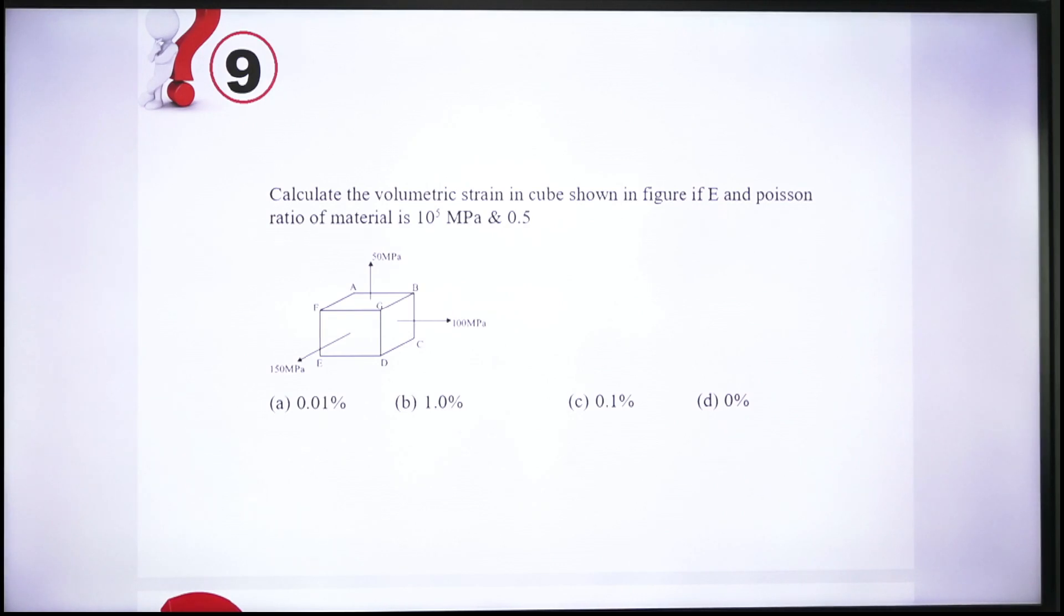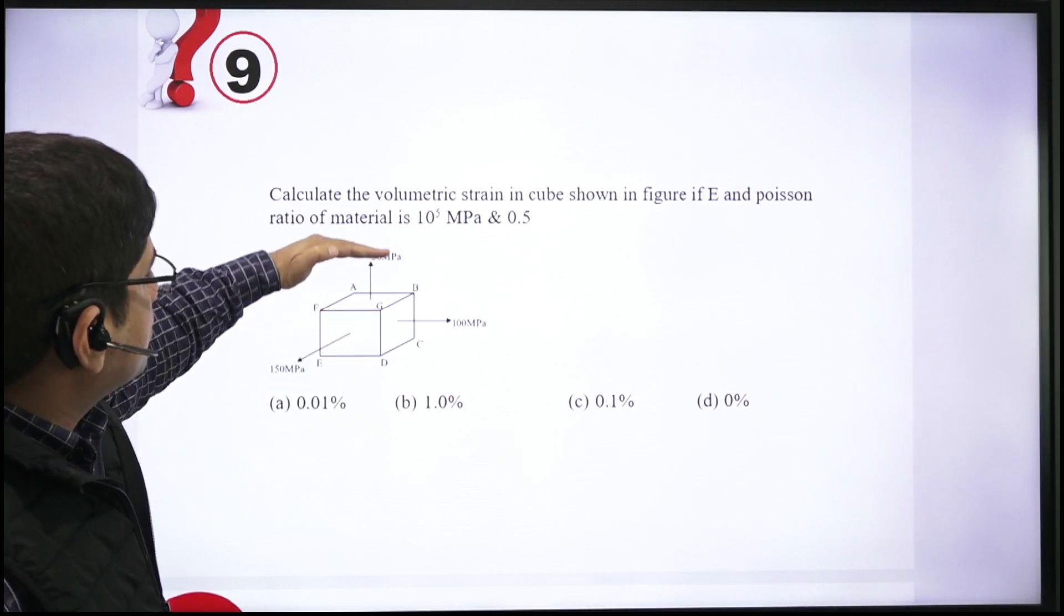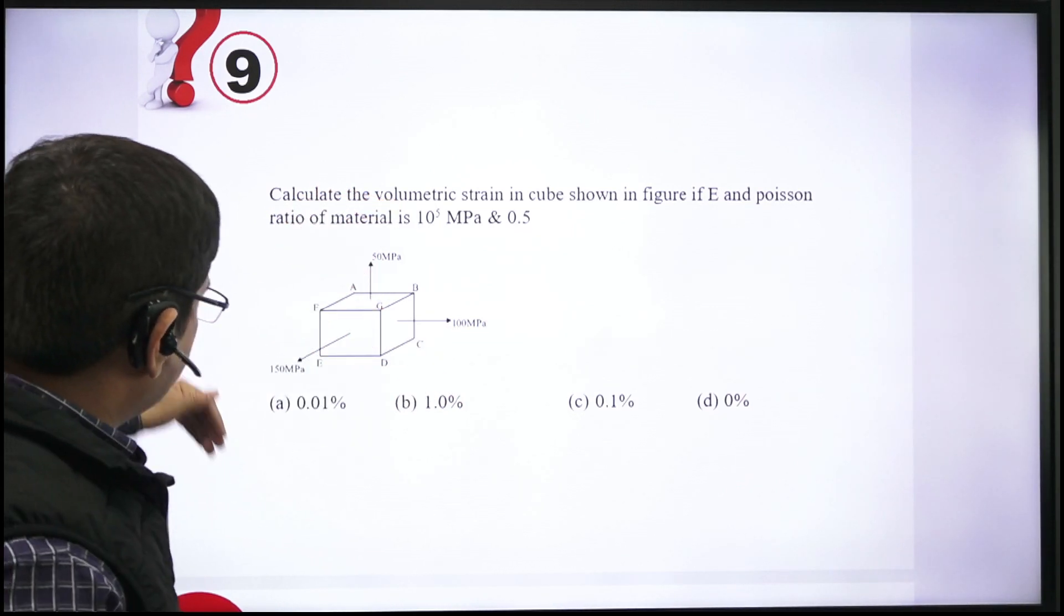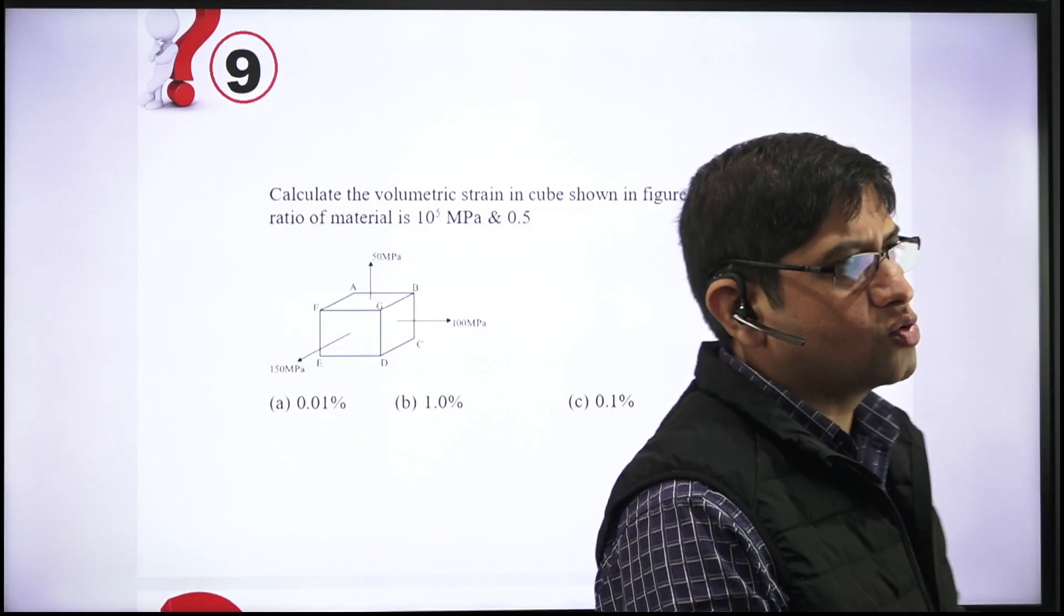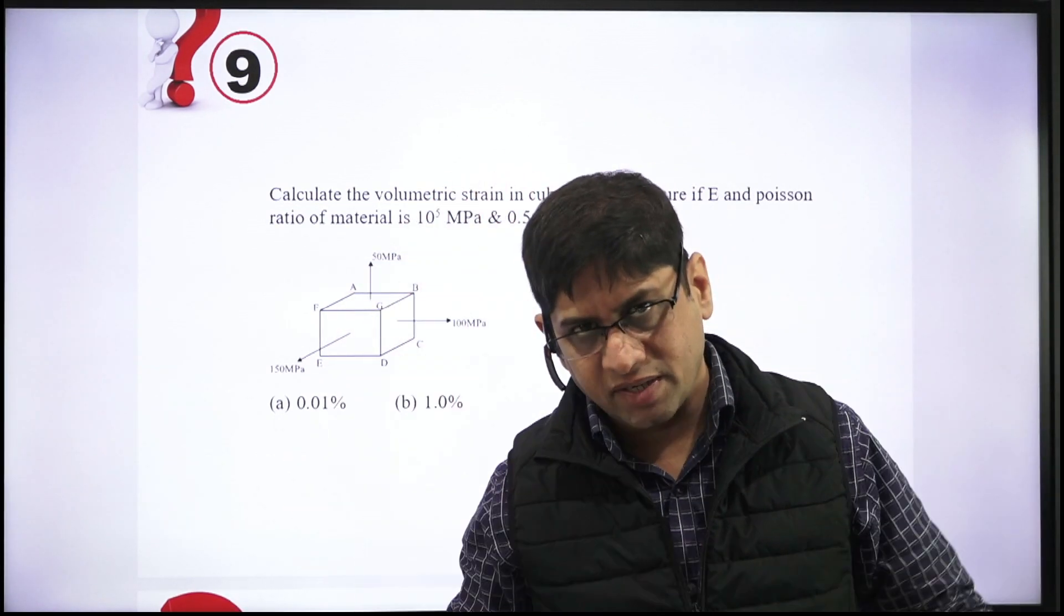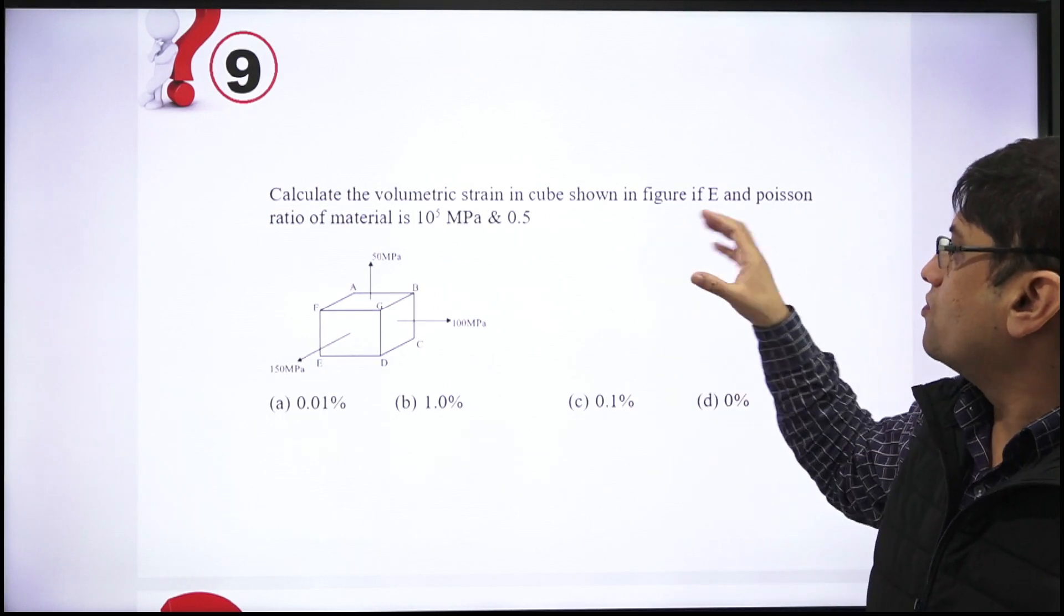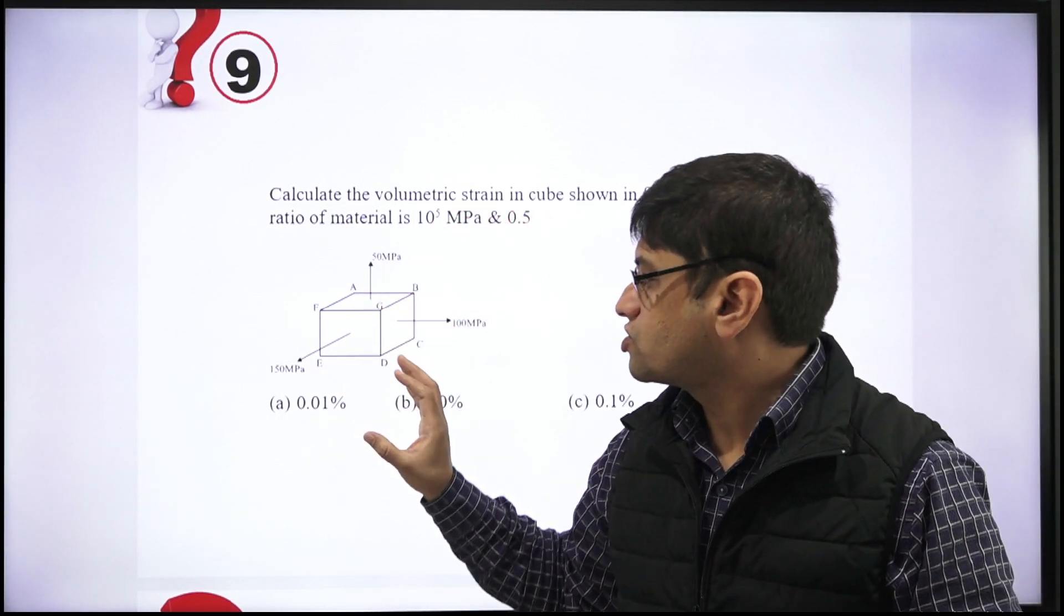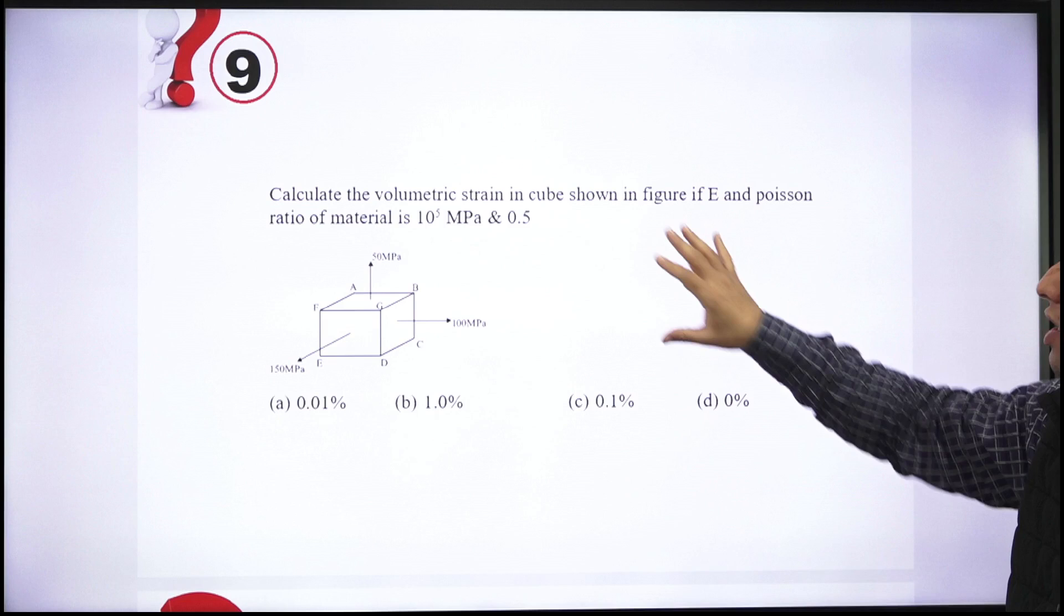Now you have to find out what is the volumetric strain in the cube if modulus of elasticity and Poisson's ratio is given to us. Modulus of elasticity is 10 to 5 MPa and Poisson's ratio is 0.5. Let me tell you, sigma X is 100 MPa, sigma Y is 50 MPa, sigma Z is 150 MPa. The body is subjected to three-dimensional stresses: sigma X, sigma Y, sigma Z. You have to tell what is the volumetric strain produced in this particular body.